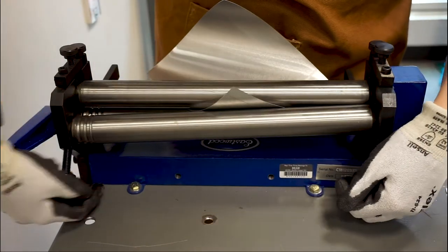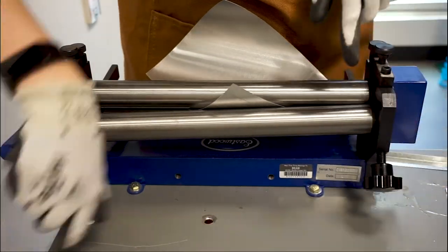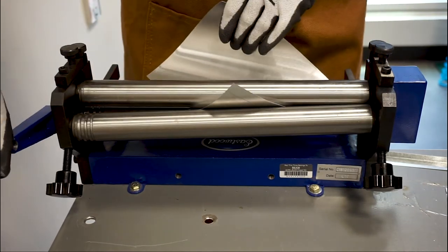In order to create a cone, the roll diameter knobs must be tightened unequally to produce a smaller diameter on one side of the sheet metal and a larger diameter on the other.